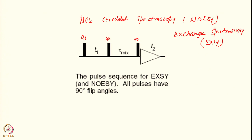You start the pulse sequence with a 90-degree pulse which creates transverse magnetization. After transverse magnetization evolves during the period T1, it is frequency-labeled with the characteristic frequency. For example, starting with the K spin magnetization IKZ, applying a 90-degree pulse generates transverse magnetization IKY, which evolves during T1 with its characteristic frequency omega K. The second 90-degree pulse selects from the various kinds of coherences that emerge.